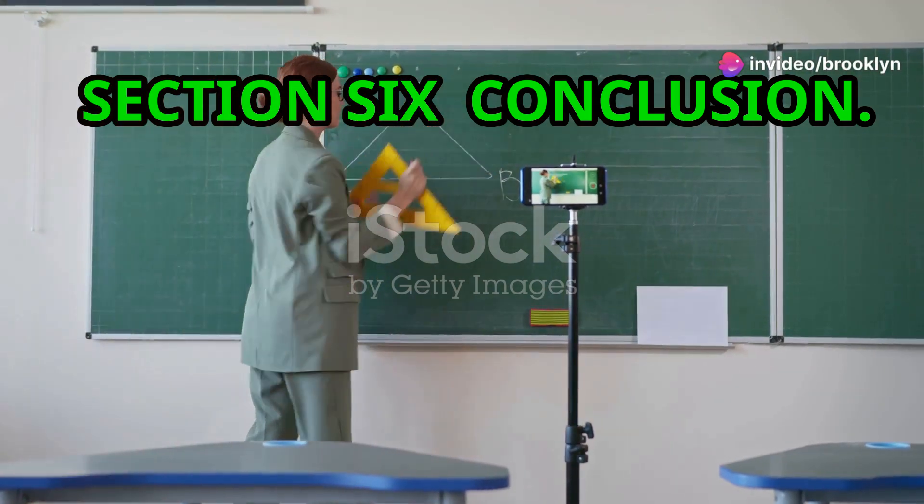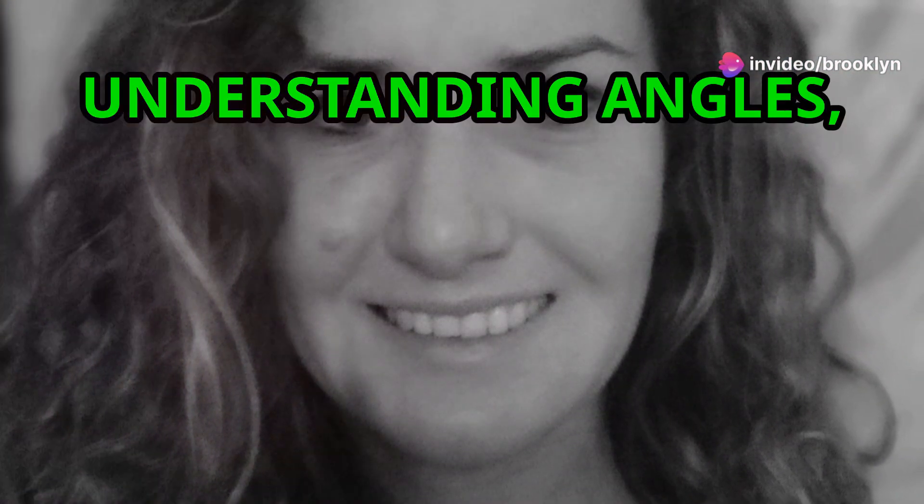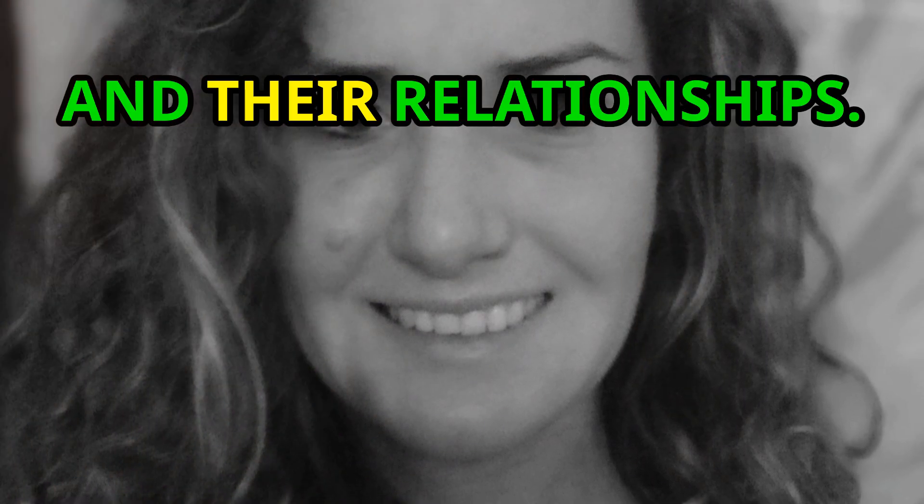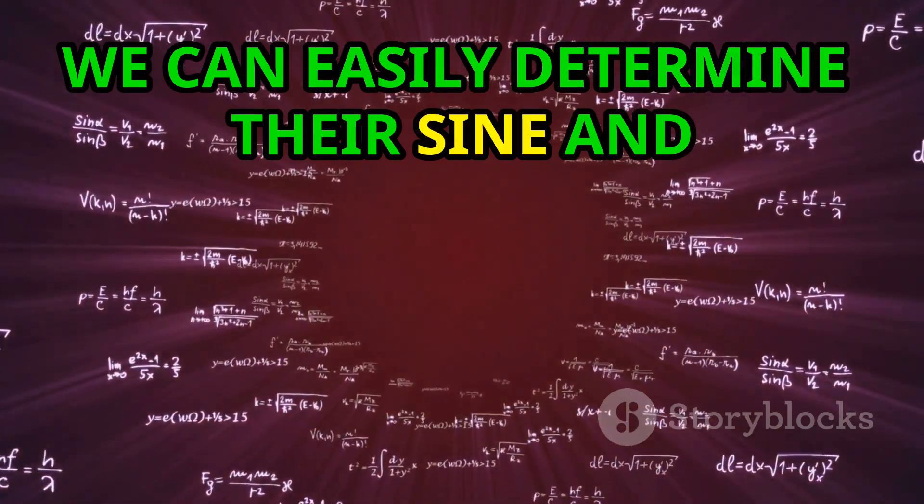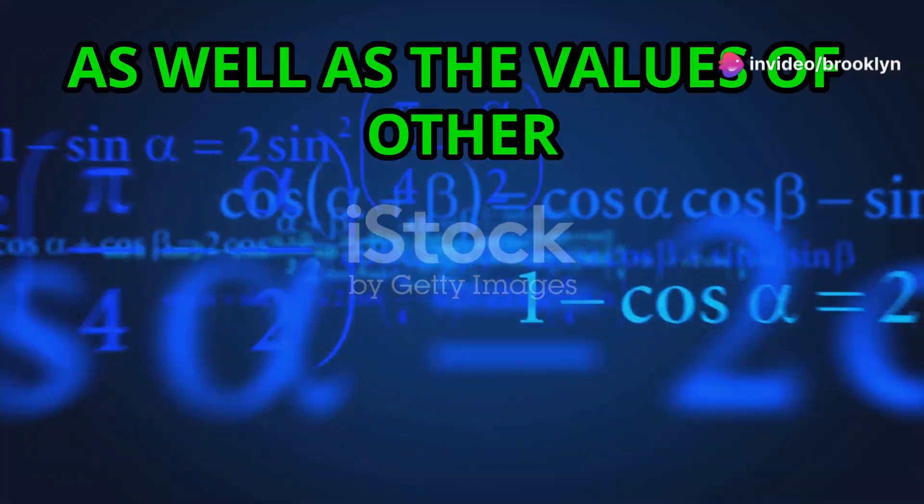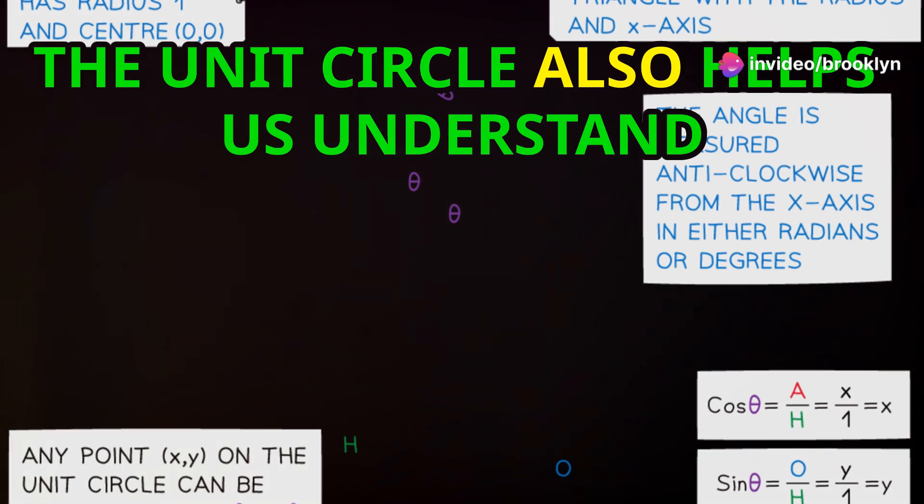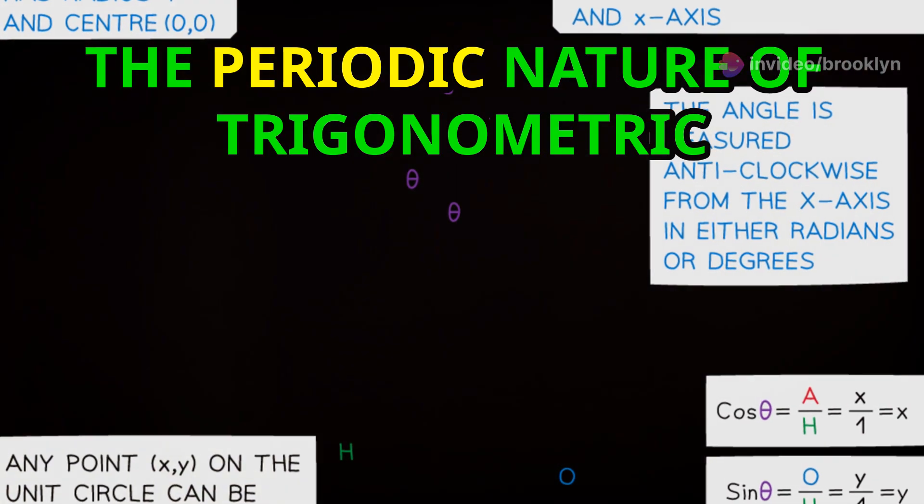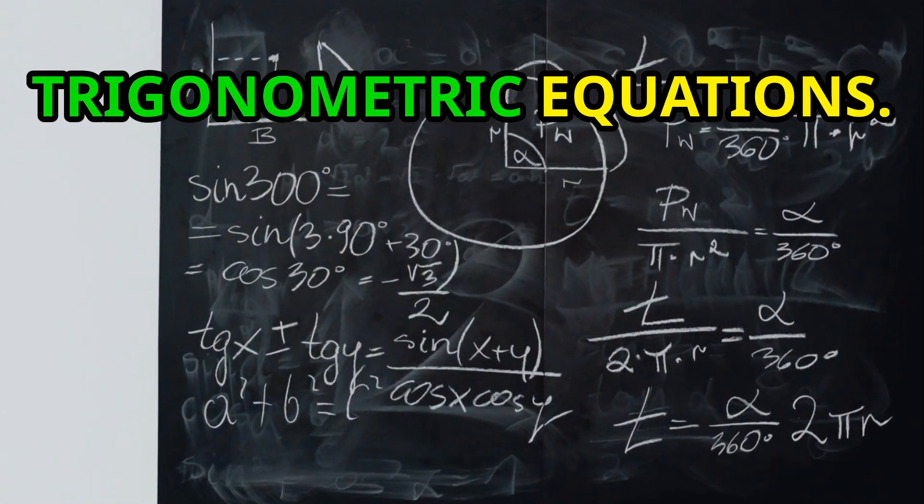Section 6: Conclusion. The Unit Circle is a powerful tool for understanding angles, trigonometric functions and their relationships. By visualizing angles on the Unit Circle, we can easily determine their sine and cosine values, as well as the values of other trigonometric functions. The Unit Circle also helps us understand the periodic nature of trigonometric functions and find secondary solutions to trigonometric equations.